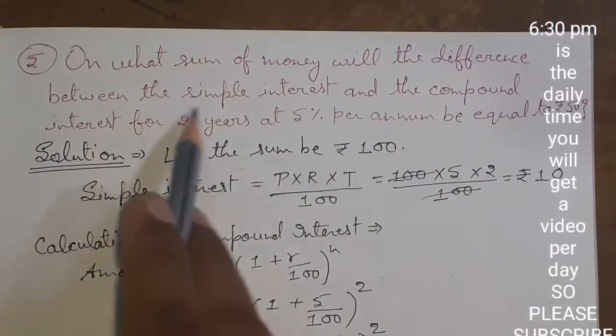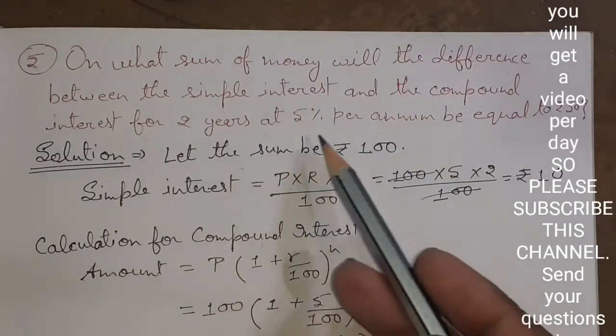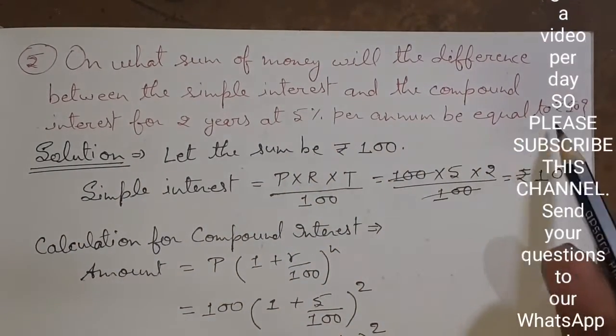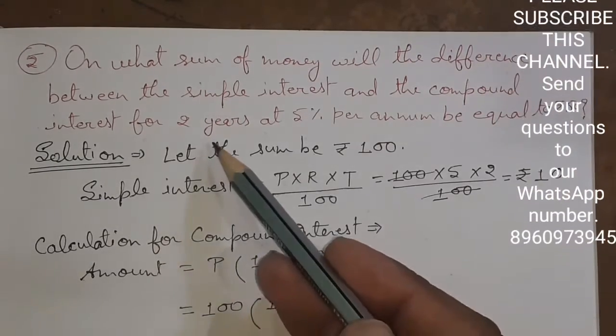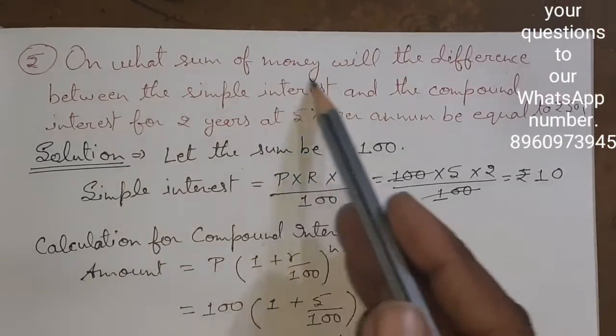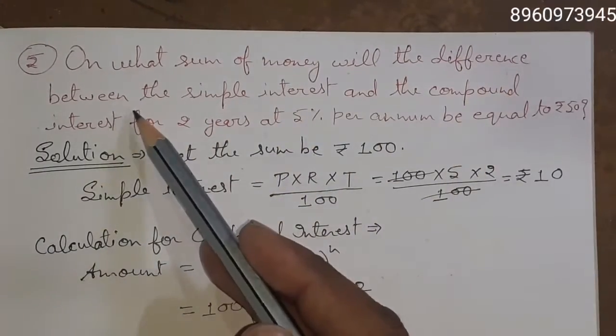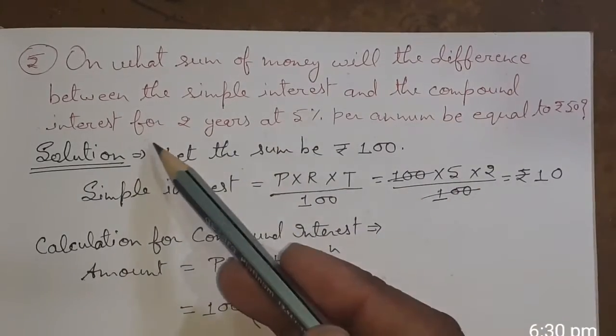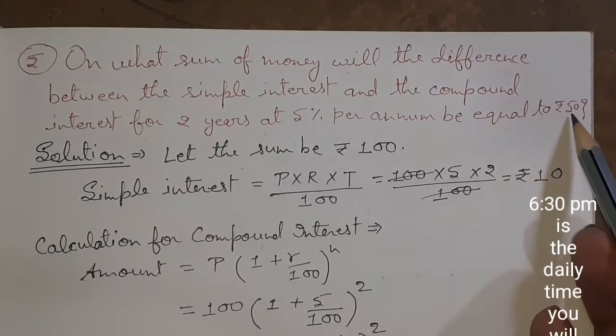The question asks: on what sum of money will the difference between the simple interest and the compound interest for two years at 5% per annum be equal to rupees 50? We have to find what sum of money gives us this difference of 50 rupees between simple interest and compound interest for two years at 5%.